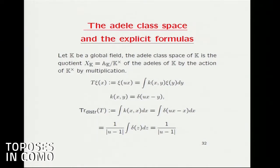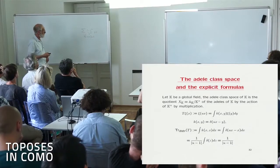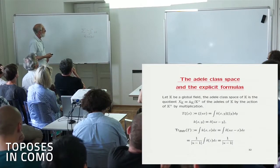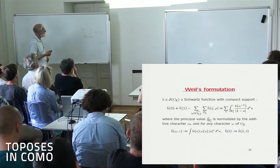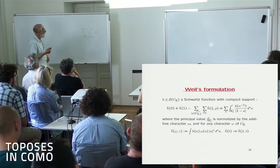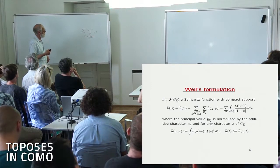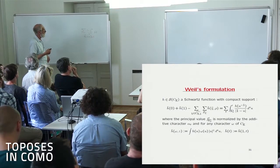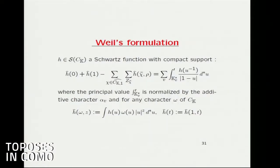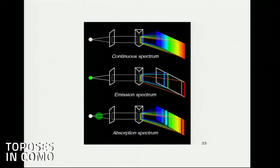There was one difficulty very different from the Selberg trace formula, which is the minus sign. In the Selberg trace formula you make a sum over eigenvalues, and on the right-hand side you have a sum of geometric terms, but here there is a minus sign. This took me a lot of time to understand.